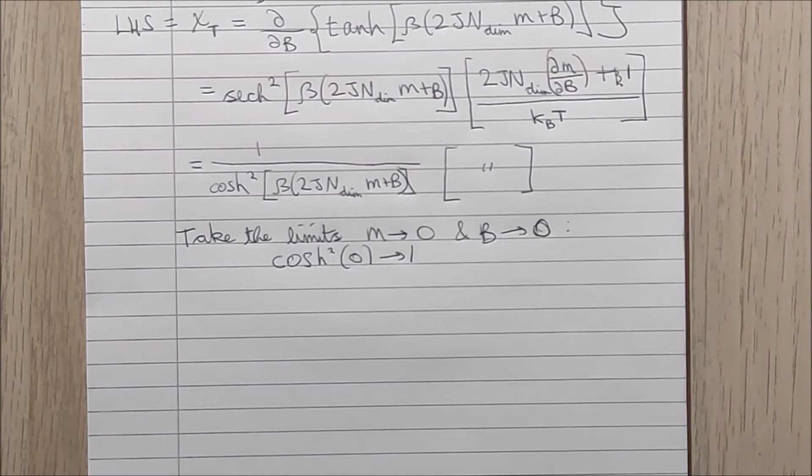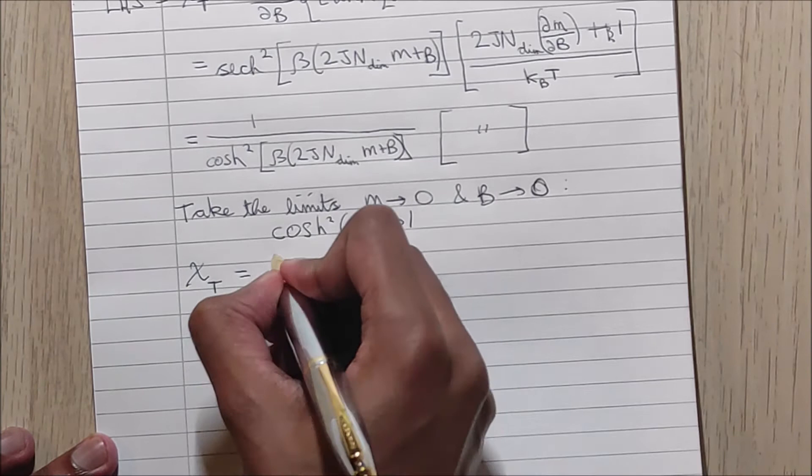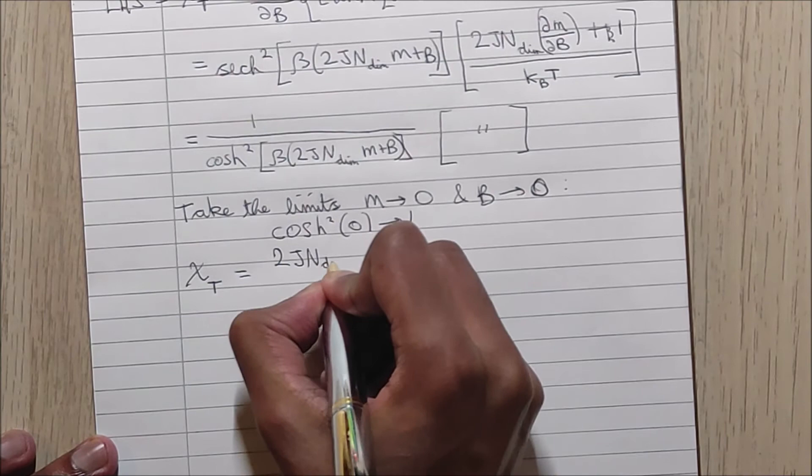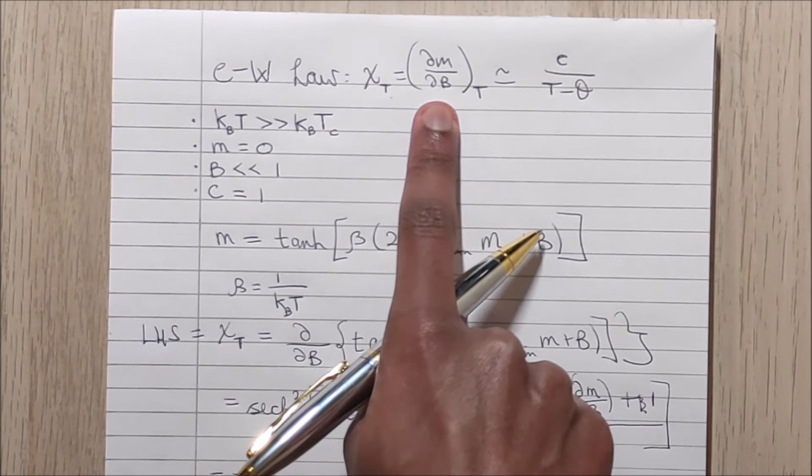So we know this term goes to one, so this fraction effectively cancels out, and then we can rearrange to get our expression for chi subscript t.